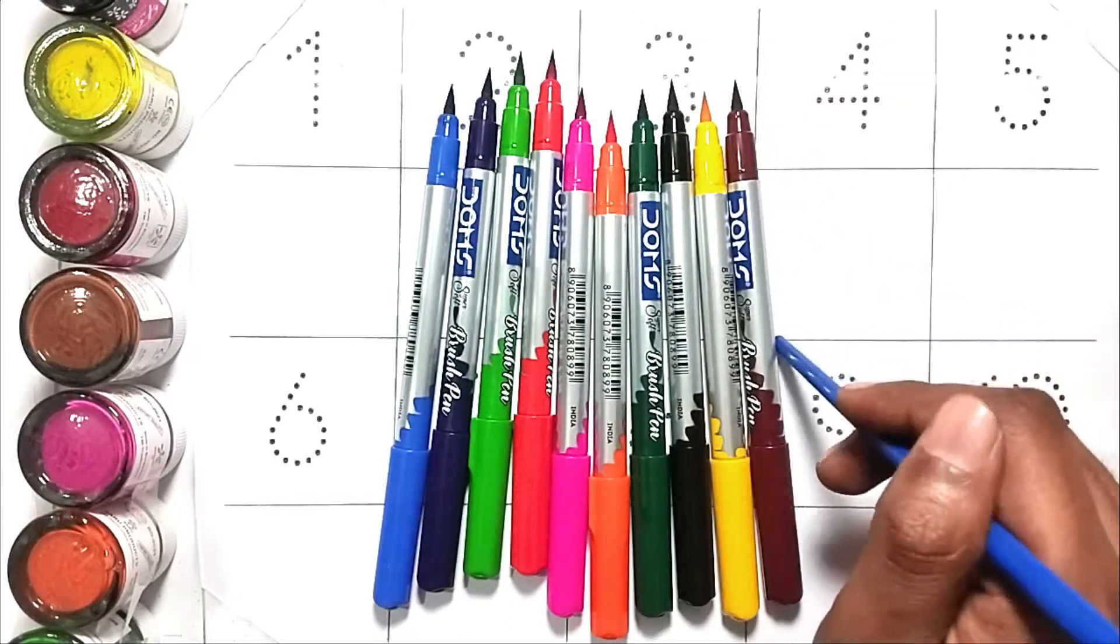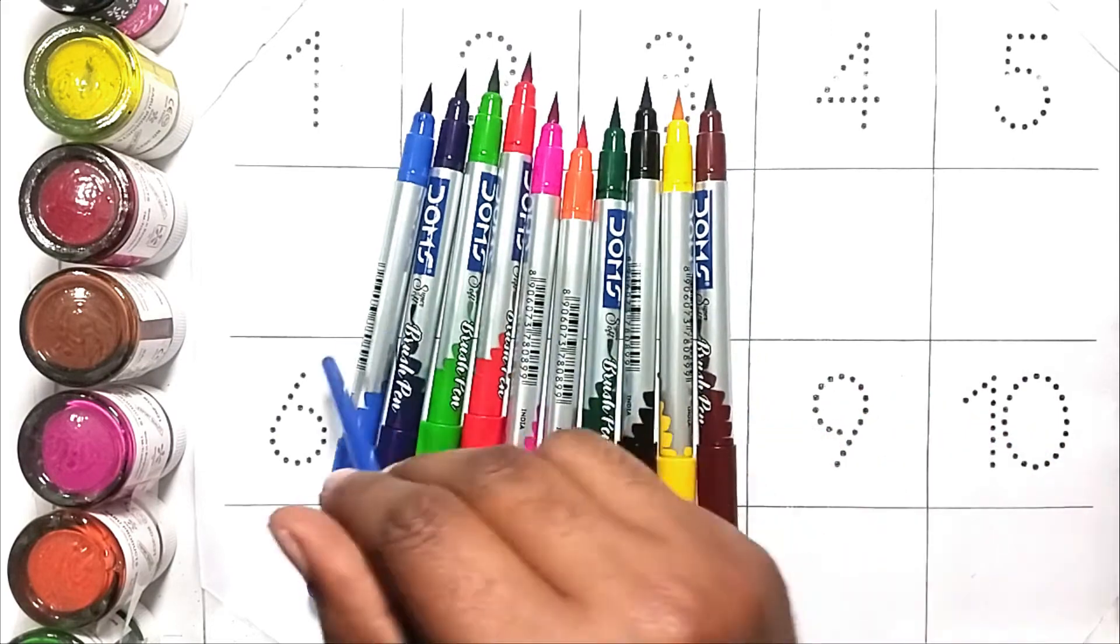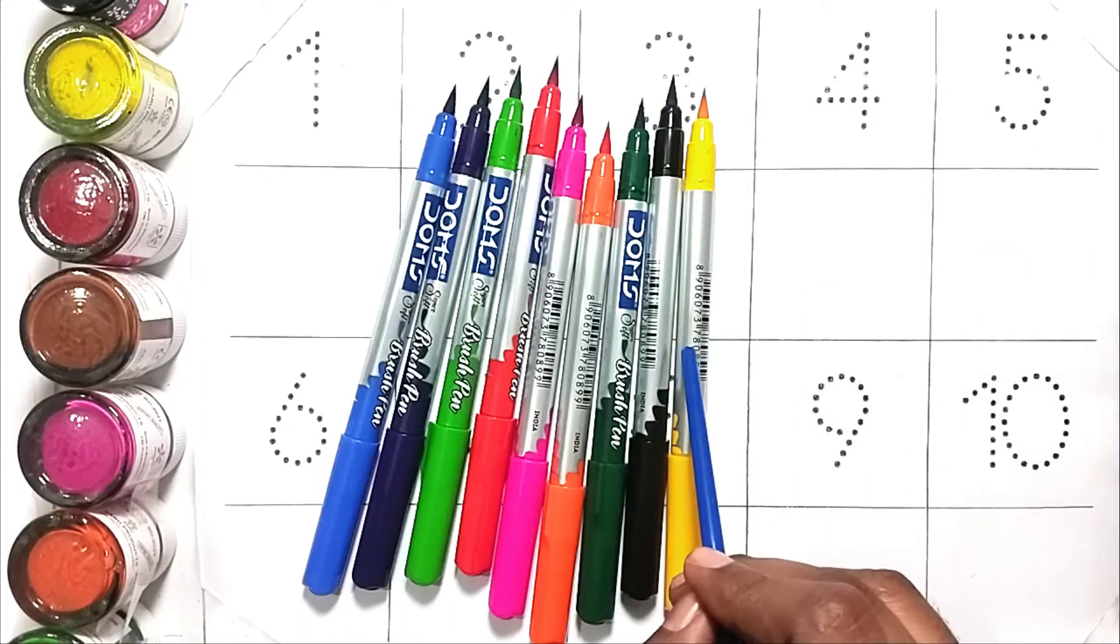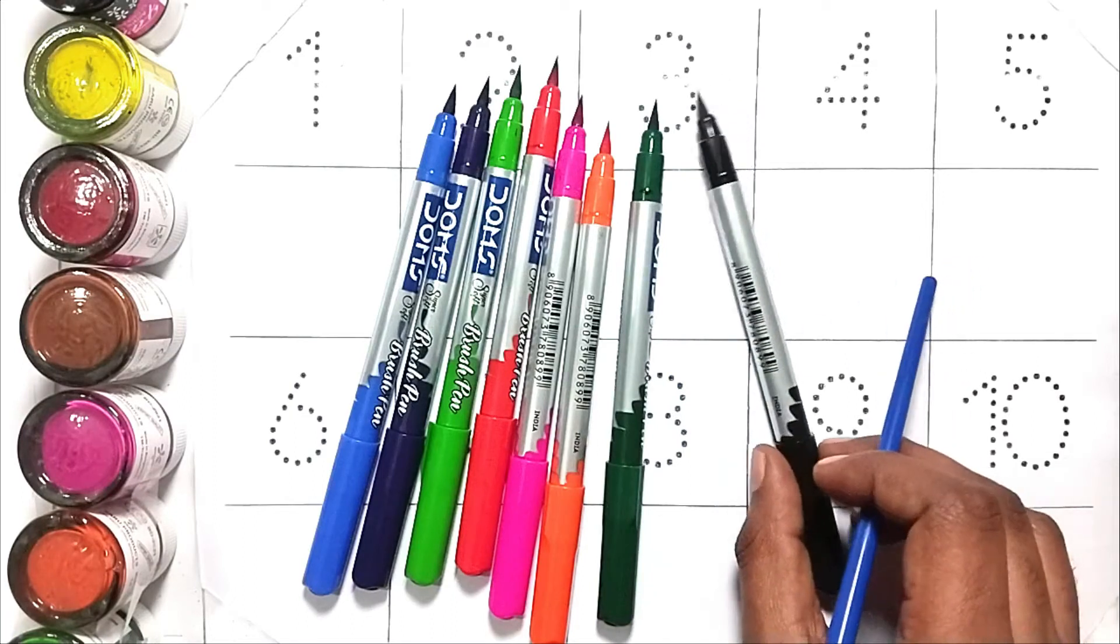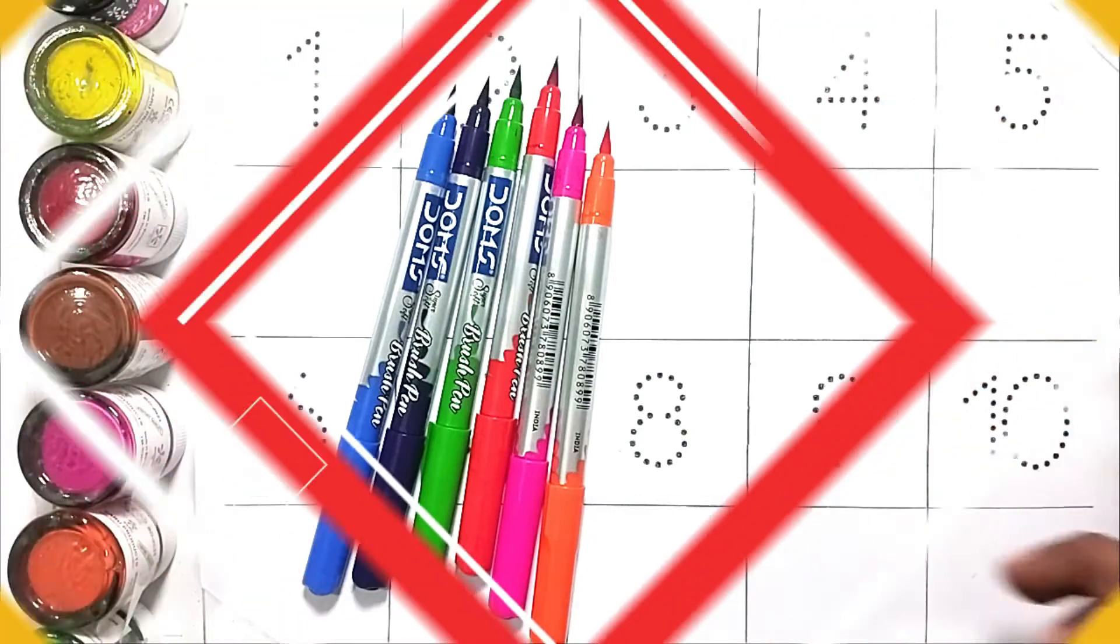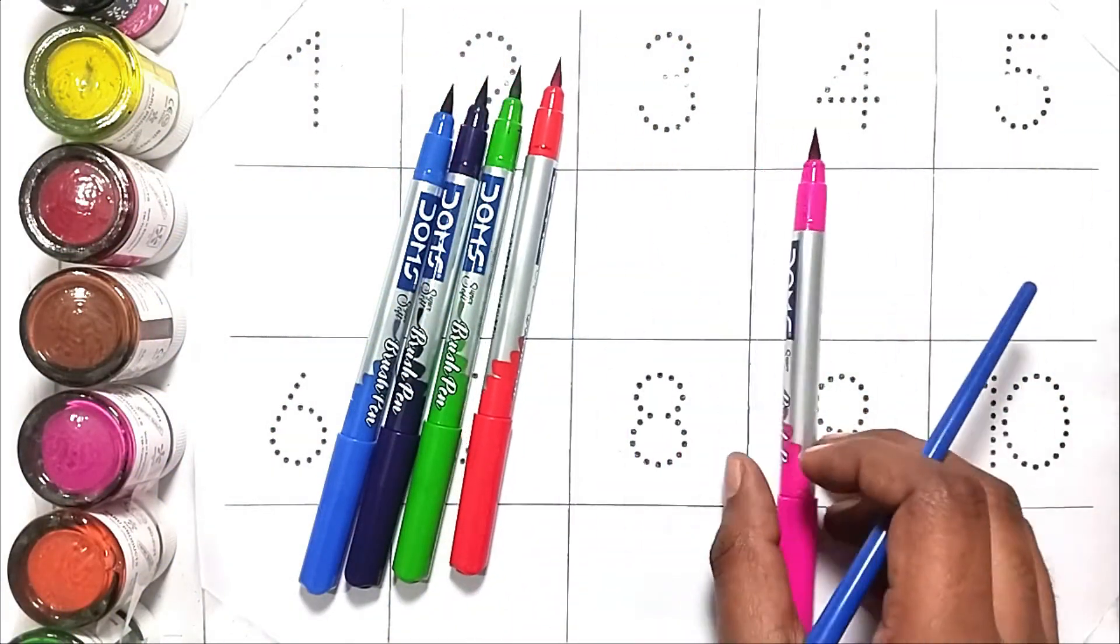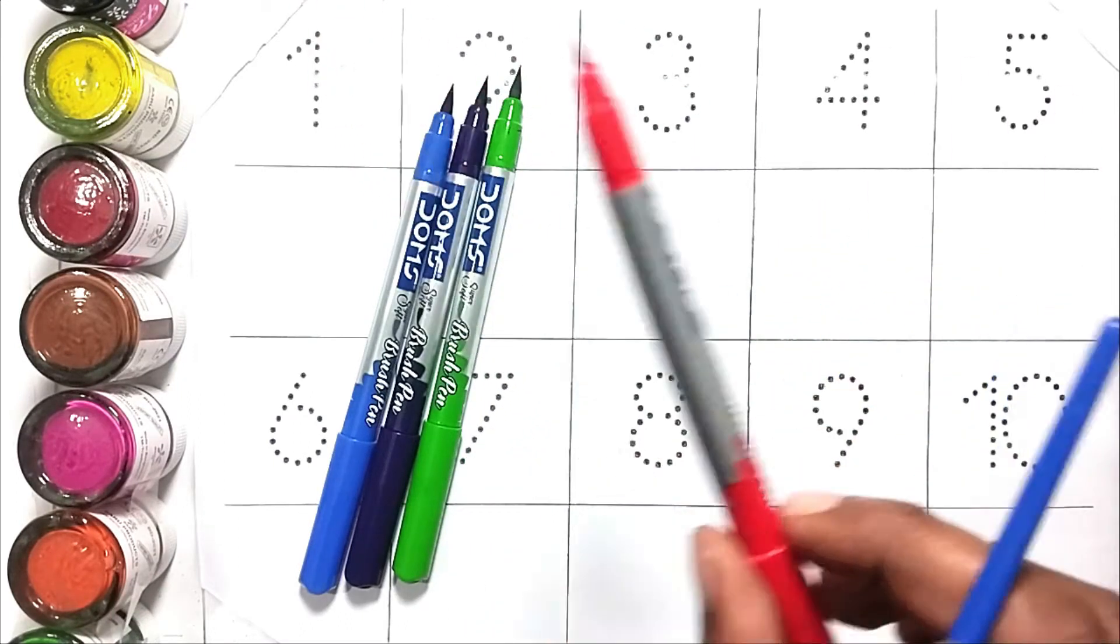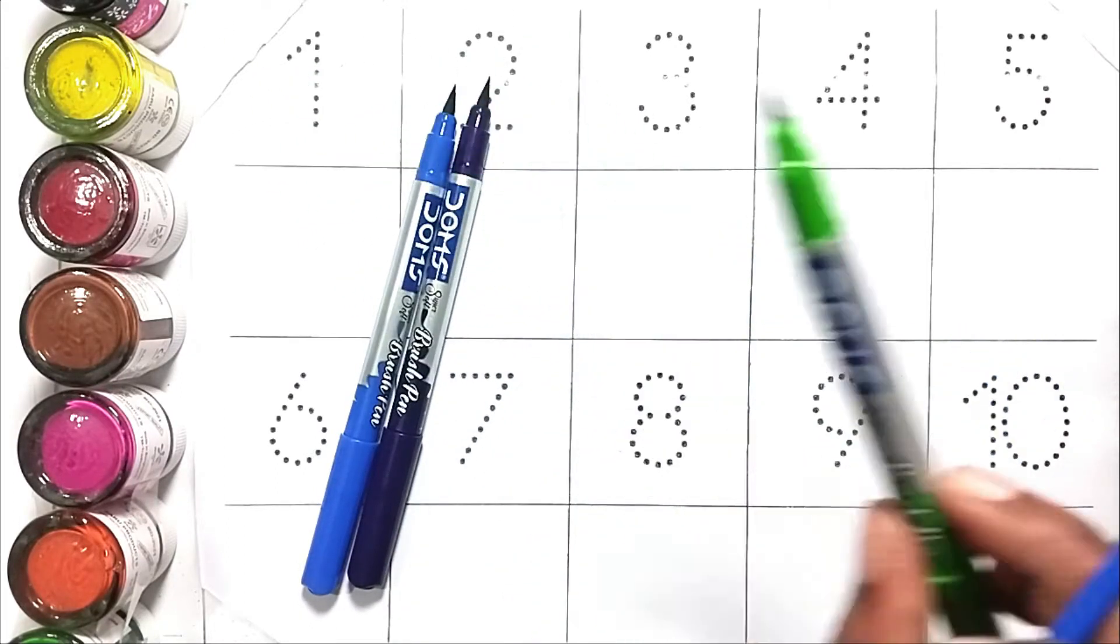Hello kids, today we will learn one to ten. This is our colors: this is brown color, this is yellow color, this is black color, this is green color, this is orange color, pink color, red color, light green color.